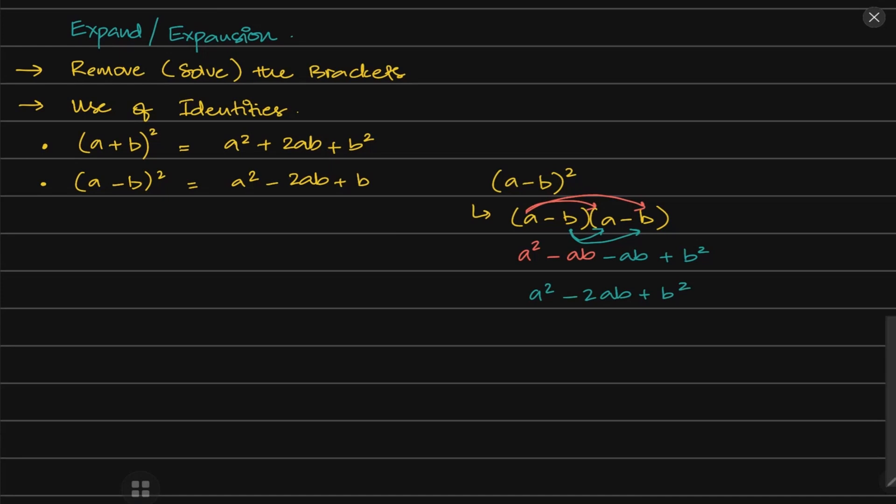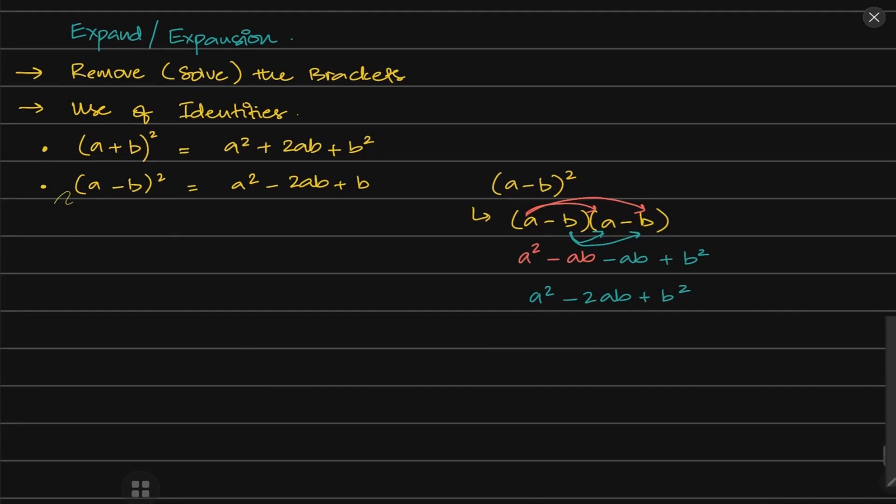So these identities that we have are basically the exact same thing as just you know, normally solve or remove a couple of brackets. These are the things that you get most of the times and you'll have to use these identities to solve them. We've done these two, now we have another one where you got (a-b) and you got (a+b) which equals a² - b².